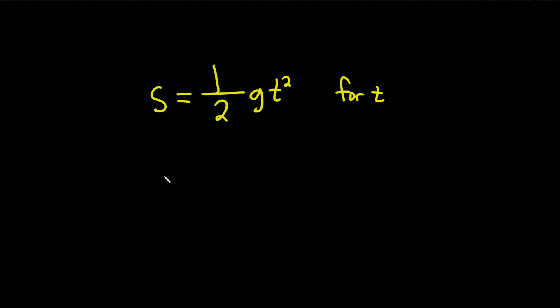So we have this equation, and we're trying to solve it for t. So maybe let's start by getting rid of this one half. To get rid of the one half, we can multiply both sides by 2. So I'll put a 2 here, and then put a 2 here on the right-hand side as well, like this.